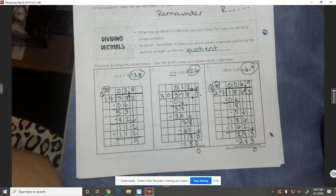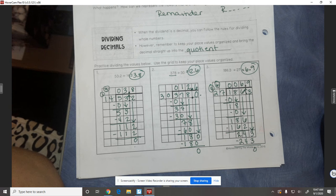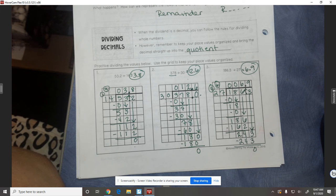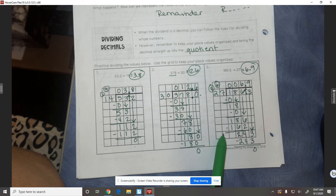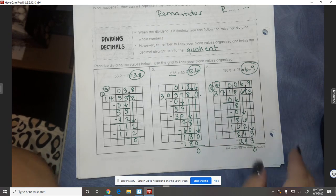So you should have gotten 6 and 9 tenths as your final answer. If you didn't, you need to pause the video and you need to go back and check your work compared to mine. You need to see, did I multiply correctly, did I subtract correctly, those are usually typically the biggest place where you mess up the most. This is long division.